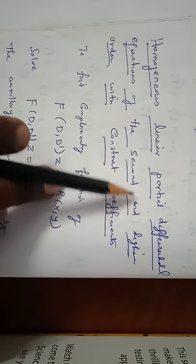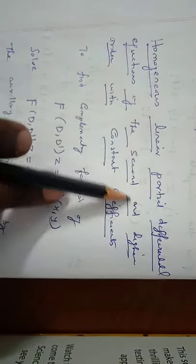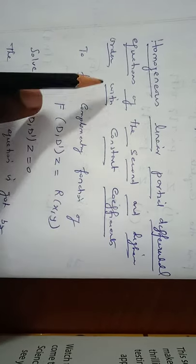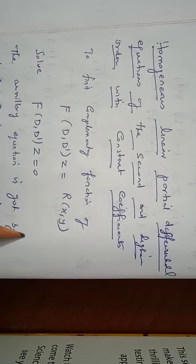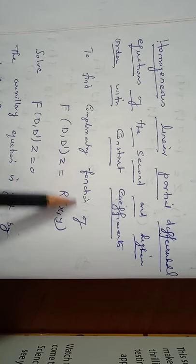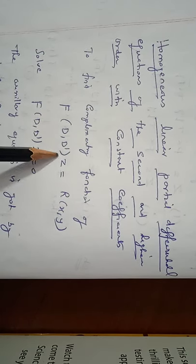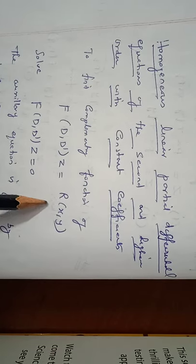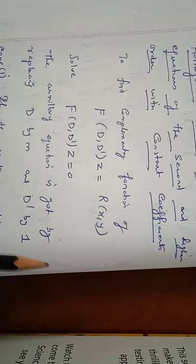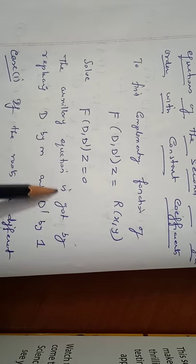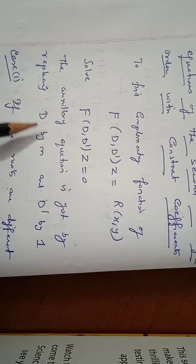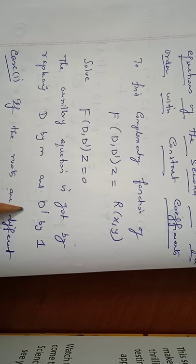Homogeneous linear partial differential equations of the second and higher order with constant coefficients. To find the complementary function of f(D, D')z = R(x, y), suppose we have to solve f(D, D')z = 0. The auxiliary equation is obtained by replacing D by m and D' by 1. This is the procedure.